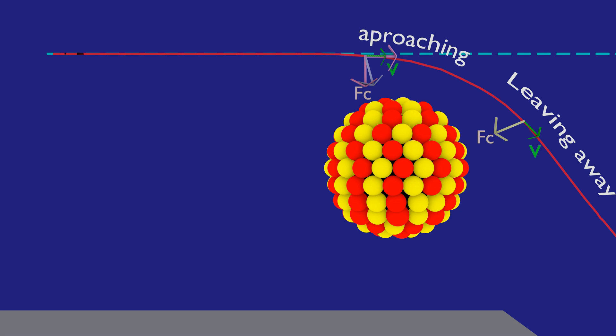But while the electron is leaving behind the nucleus, the direction of force will be opposite to the direction of motion. This component of force which acts in backward direction will slow down the electron.